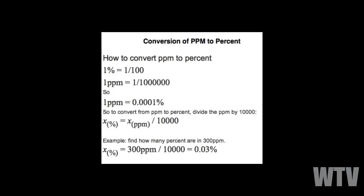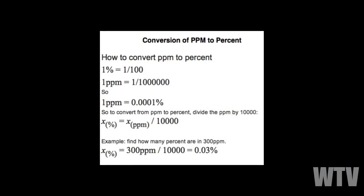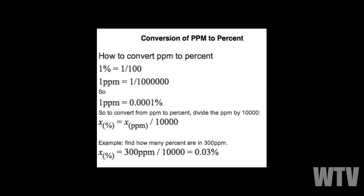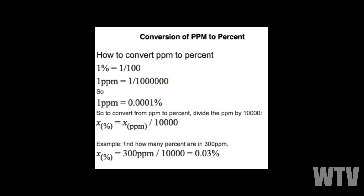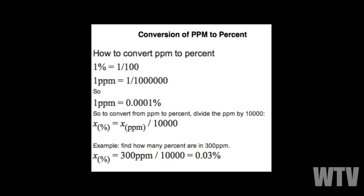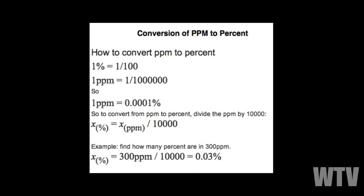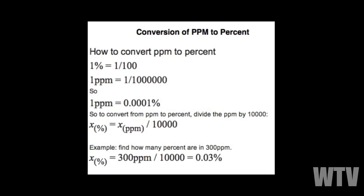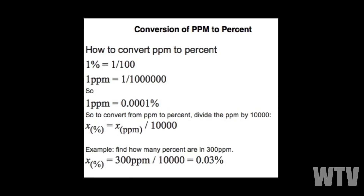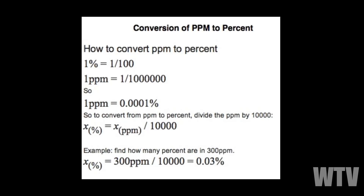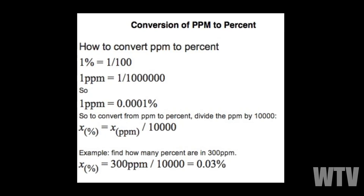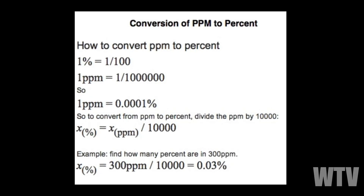When you hear that CO2 levels are too high, they represent it in parts per million (PPM). According to co2levels.org, CO2 levels in 1950 were around 310.5 parts per million, and as of November 8th, 2021, it is 414.96 parts per million.